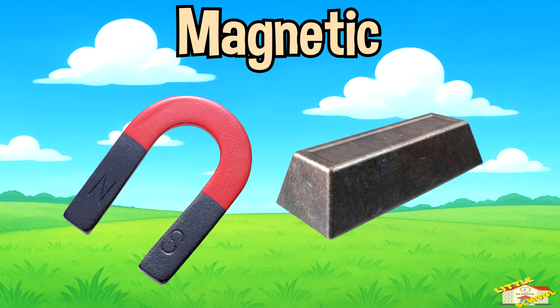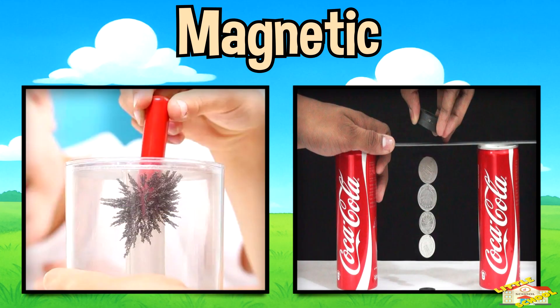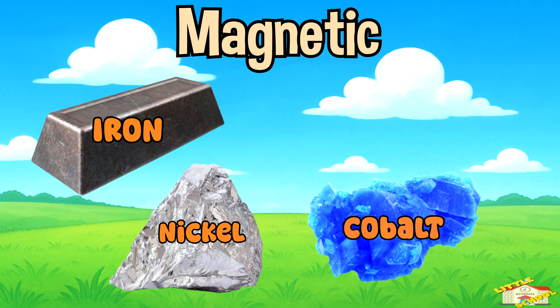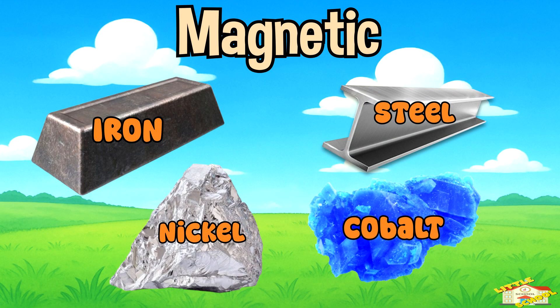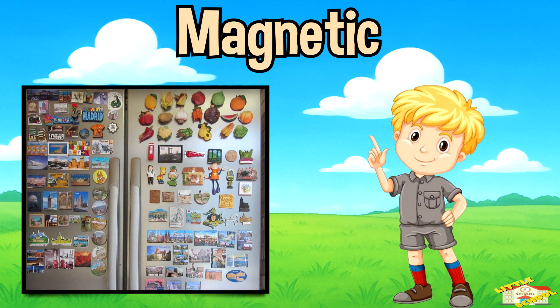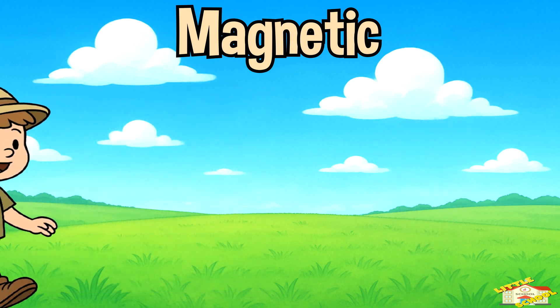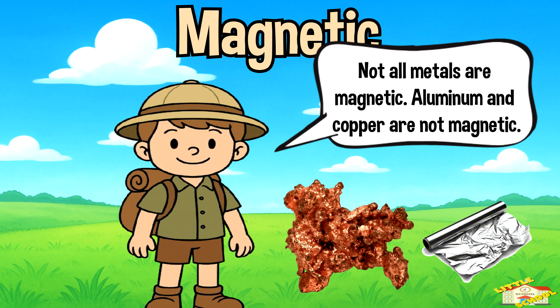Magnetic. Magnetic materials are attracted to magnets. Examples are iron, nickel, cobalt, and steel. That's why fridge magnets stick to the refrigerator door. Not all metals are magnetic — aluminum and copper are not magnetic.